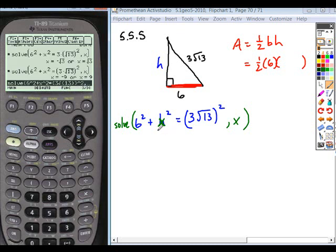So plus or minus nine, well can you have a negative nine for your height? No, so your answer will be nine for x, which is your height. And then half of six is three, three times nine will give you the measurements that you're looking for.